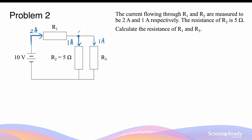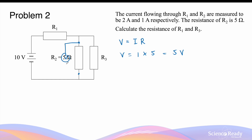We begin by using Ohm's law for R2 to find its potential difference: 1 amp multiplied by 5 ohms gives 5 volts. This means if you connected a voltmeter in parallel with R2, you'd measure a 5 volt potential difference. Since R2 and R3 are connected in parallel, measuring the potential difference across R3 with a voltmeter would also give 5 volts.